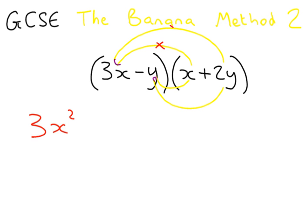3x times 2y. Well, our letters multiplied together are x, y. And 3 times 2 gives us 6. So 3x times 2y is 6xy. Now this is a plus and this is a plus. So our answer is plus 6xy.